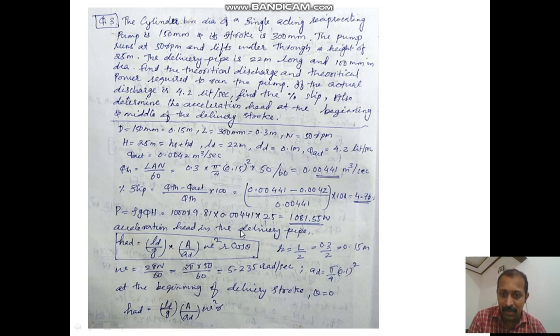Use the theoretical value because they asked for theoretical power. Always use theoretical discharge for this equation because we are deriving from the equation itself. That is why we're using Q theoretical here. We got 1081.55 watts.